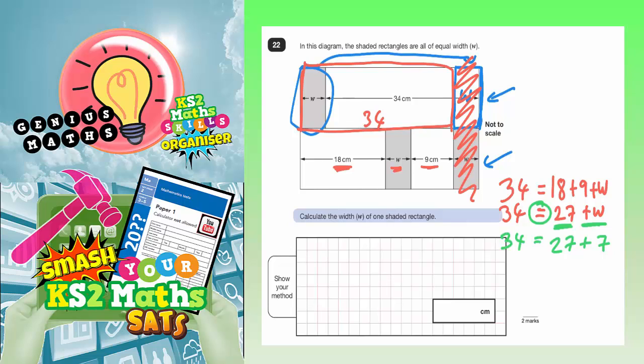If you think about it, 27 plus 7 does indeed equal 34. So, it looks like the W is worth 7 centimeters.